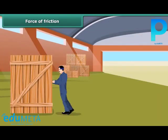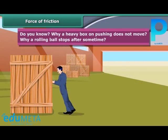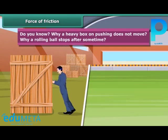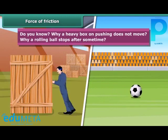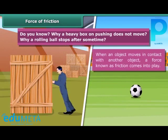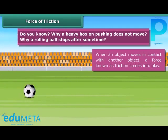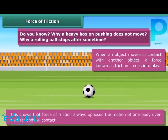Force of friction. Do you know why a heavy box on pushing does not move? Why does a rolling ball stop after some time? When an object moves in contact with another object, a force known as friction comes into play. The force of friction always acts on all objects, and its direction is always opposite to the direction of motion. The moving object gradually slows down and ultimately stops due to the force of friction, which always opposes the motion of one body over another body in contact.